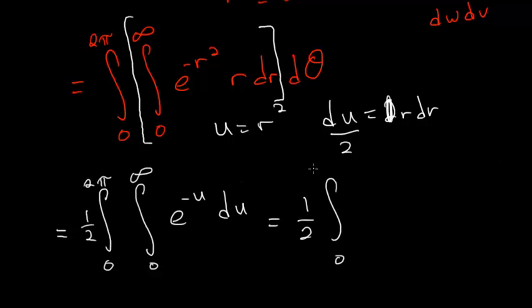And then evaluating that inner integral, we have 0 to 2 pi and the inner integral evaluates to minus e to the minus u from 0 to infinity. We also need d theta here and d theta here.